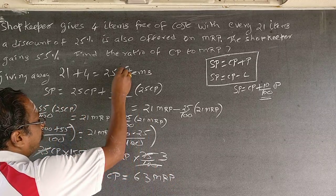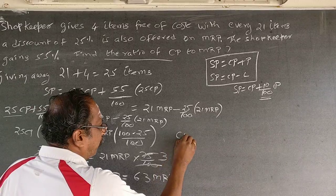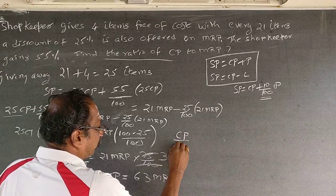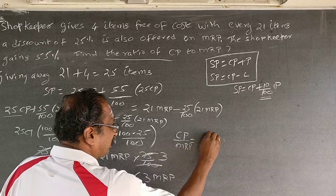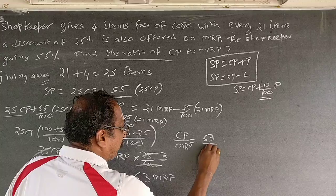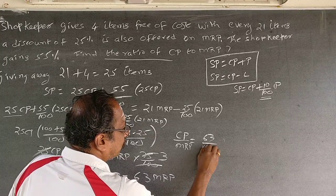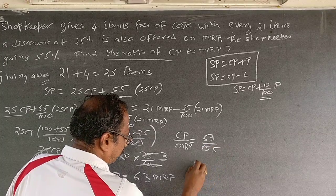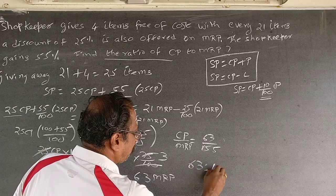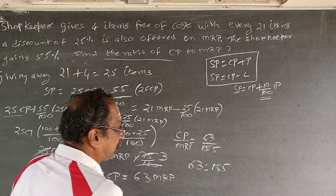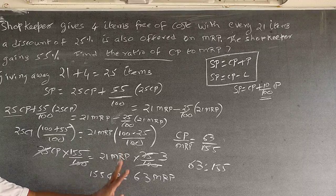The question asks for the ratio of CP to MRP. So CP divided by MRP equals 63 by 155. The answer is 63 is to 155 — as simple as this.